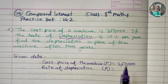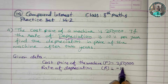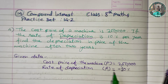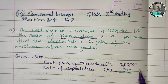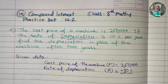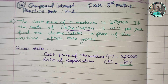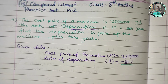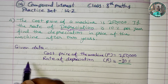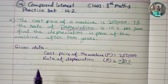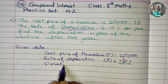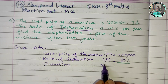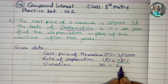So what do we mean? Minus 10%. This is a 10% reduction, so the rate is minus 10%. We have to account for this reduction. The duration N is 2 years.